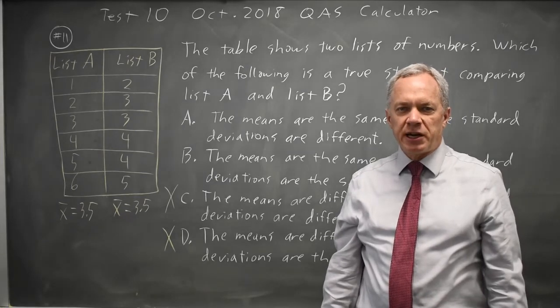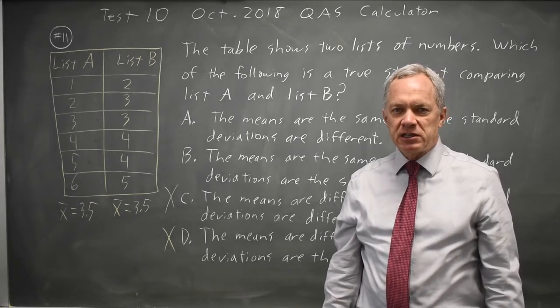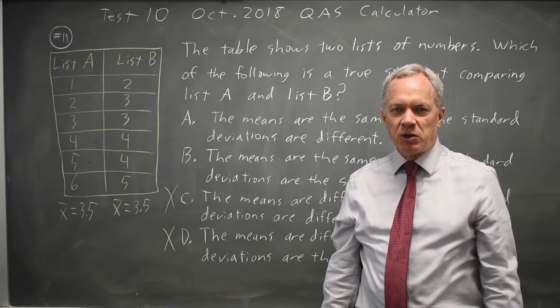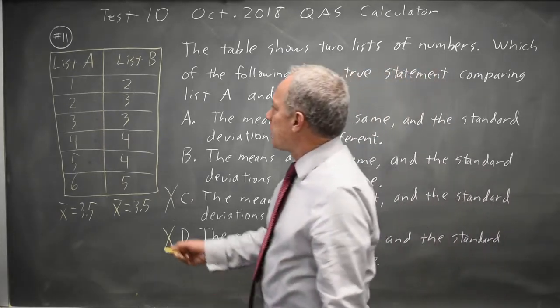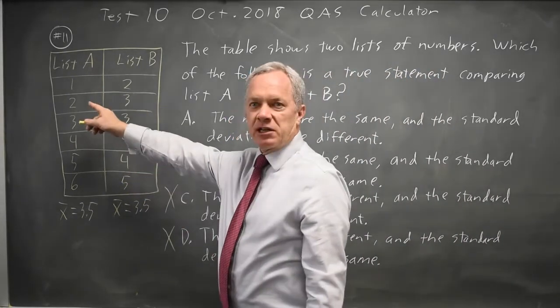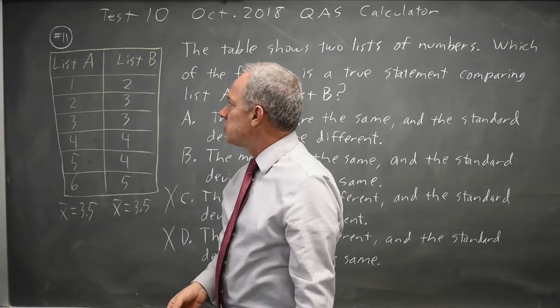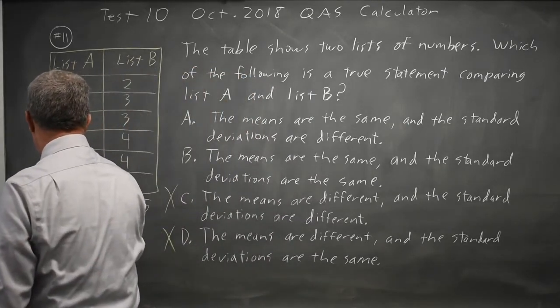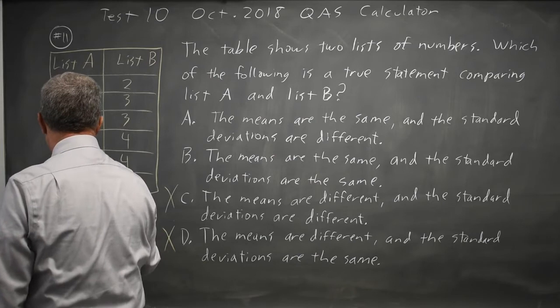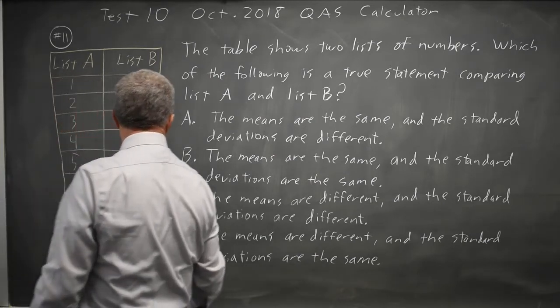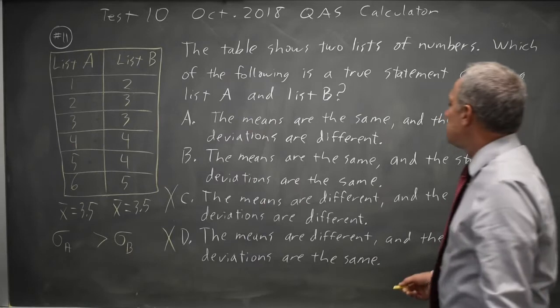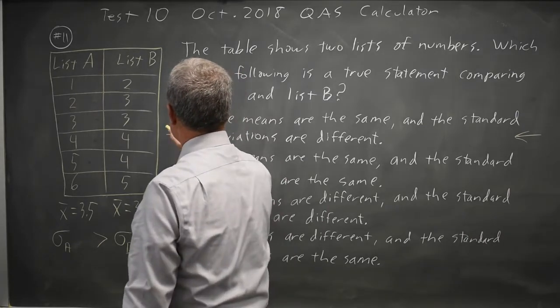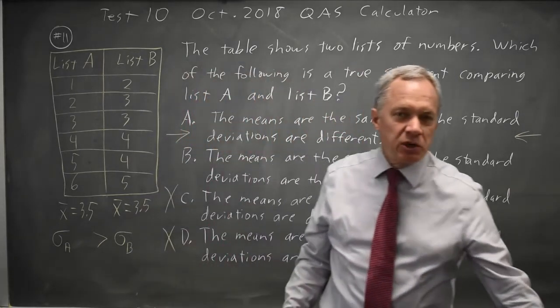Standard deviation is a measure of how spread out numbers are in a list, and it takes into account all numbers in contrast to the range, which is only the smallest to the largest. List A is more spread out than list B. List A goes from 1 through 6. List B is 2 through 5. So list A has a larger standard deviation. So sigma A is greater than sigma B. You don't have to calculate that. Means are the same. Standard deviations are different because how spread out list A is is different from how spread out list B is.